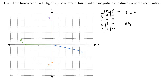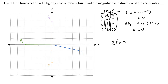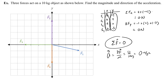So I sum the x's: 4 plus negative 4, which is 0. And for the y component: negative 1 plus 4 plus negative 3, which also gives me 0. That means the net force is 0 — there's no angle because there's no net force. All of the x components cancel each other out, and all of the y components cancel each other out. So the acceleration, which is net force divided by mass, is 0 divided by 10 kilograms, which is 0.